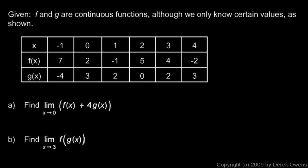The way to interpret this table is we say when x is negative 1, then f of x is 7. So f of 0 is 2, f of 1 is negative 1, and so on. And we can get values for g of x on the bottom row here. g of negative 1 is negative 4, and so on.